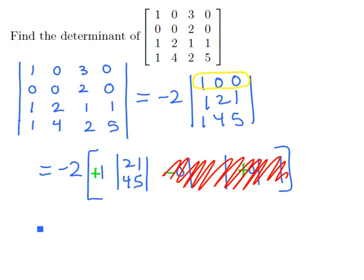So cleaning up our work again, we see we have negative 2 times positive 1 times the determinant of 2, 1, 4, 5.